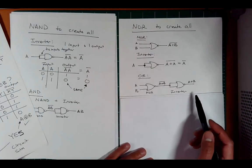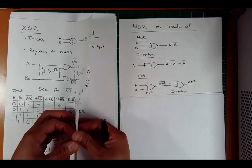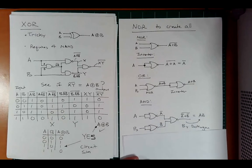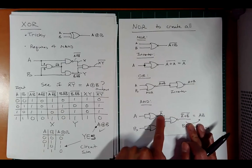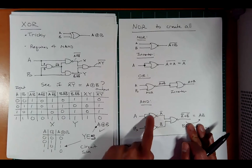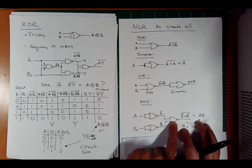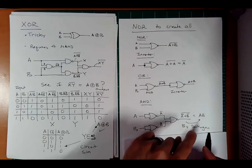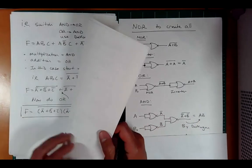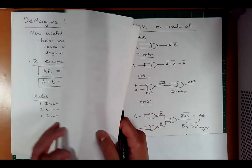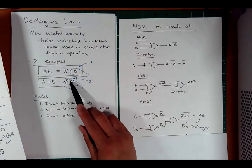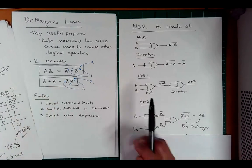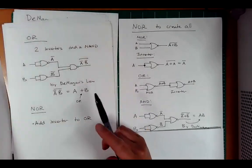For an AND gate using NOR gates, it's a bit trickier. You take two inverters — giving A-bar and B-bar — and then NOR them together. You get A-bar plus B-bar, all inverted. By DeMorgan's Laws, that equals AB. So two inverters followed by a NOR gives you AND.